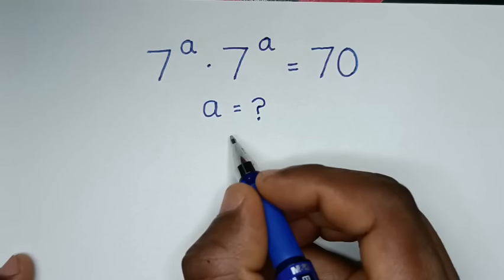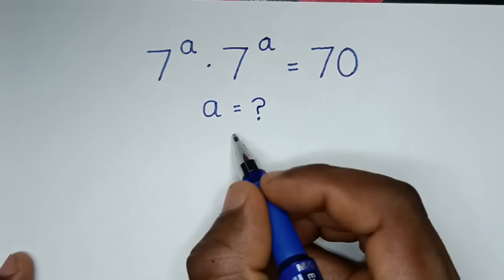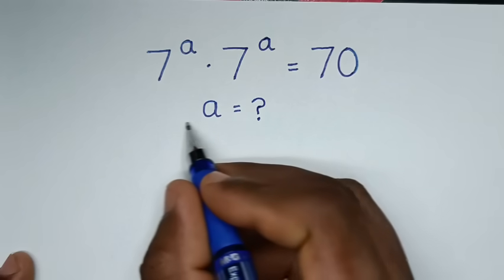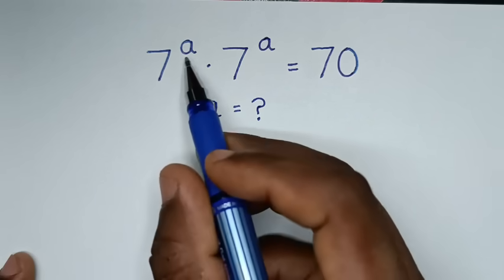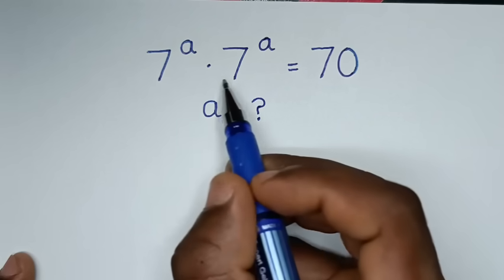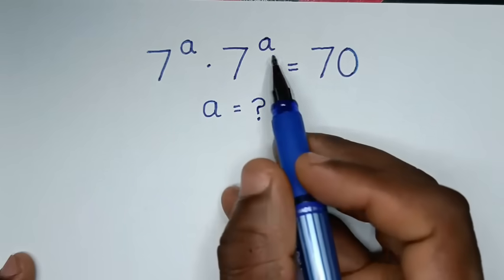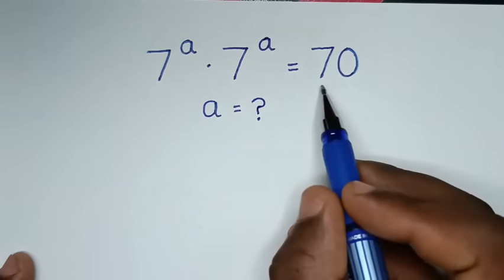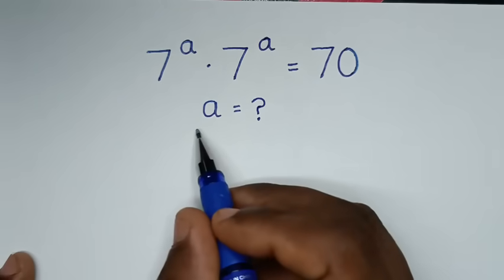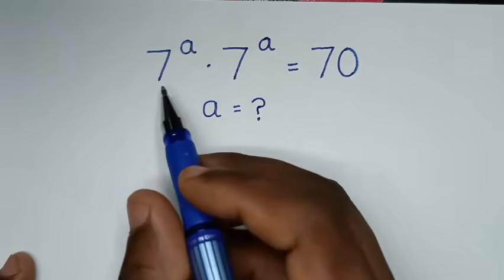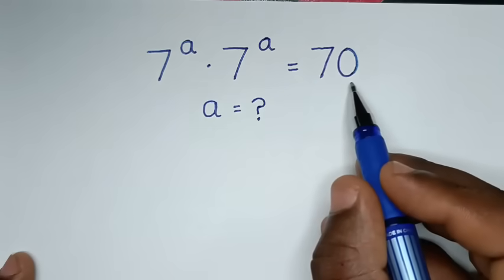Hello, you are welcome to solve this math problem, which is 7 power of A times 7 power of A is equal to 70. We need to find the value of A from this equation.